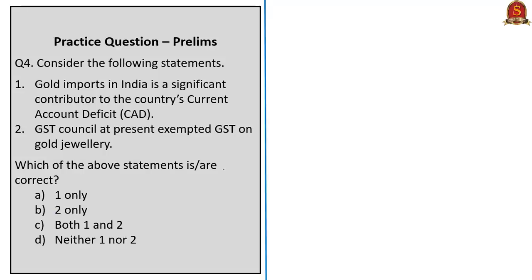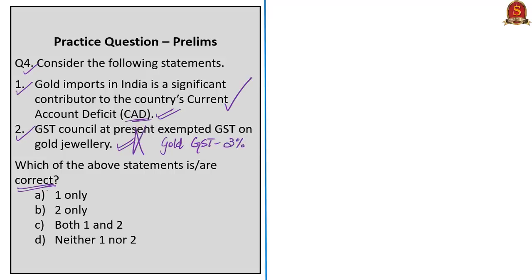Next question: consider the following statements. Statement one: gold imports in India are a significant contributor to the country's current account deficit. Statement two: the GST Council at present has exempted GST on gold jewelry. Statement one is correct because gold and petrol imports are significant contributors to the current account deficit. Statement two is incorrect as gold is not exempted from GST; gold currently attracts 3% GST. So the correct option is Option A: one only.